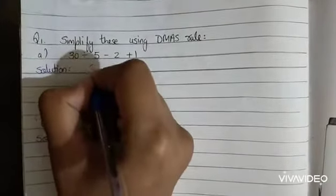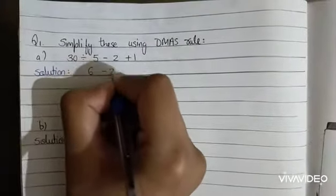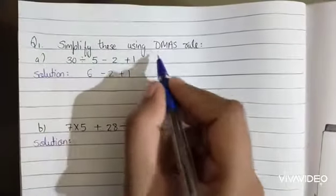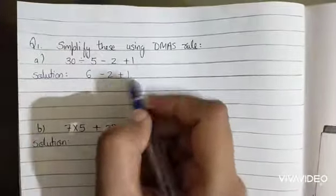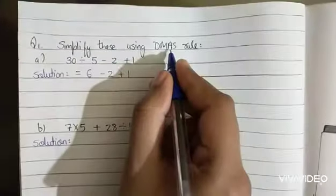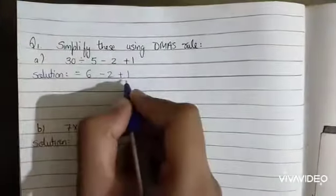Now according to DMAS rule, we then multiply, but here multiplication symbol is not given. So we will do addition. Here addition symbol is given.